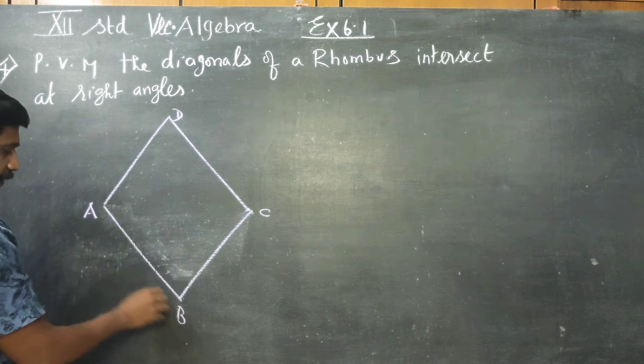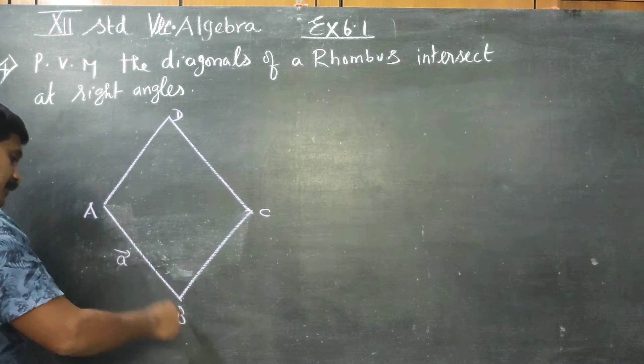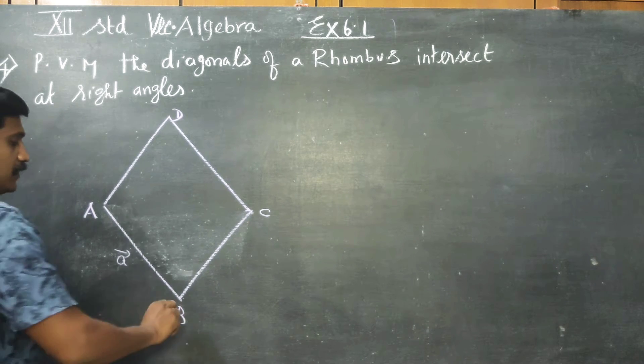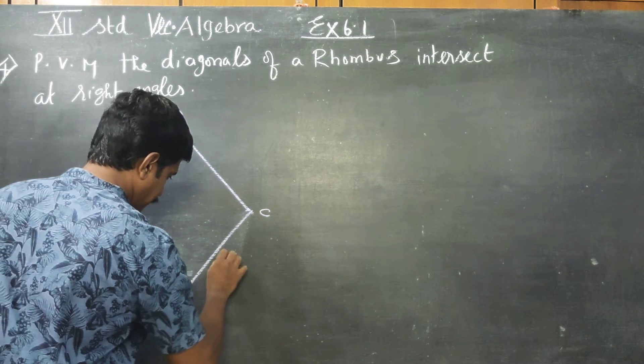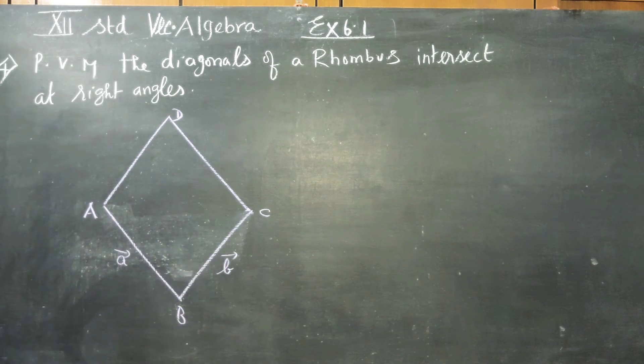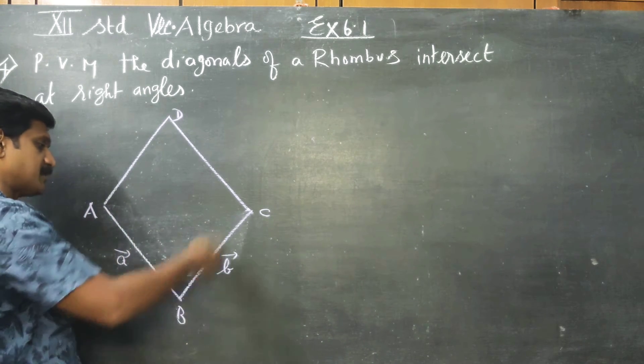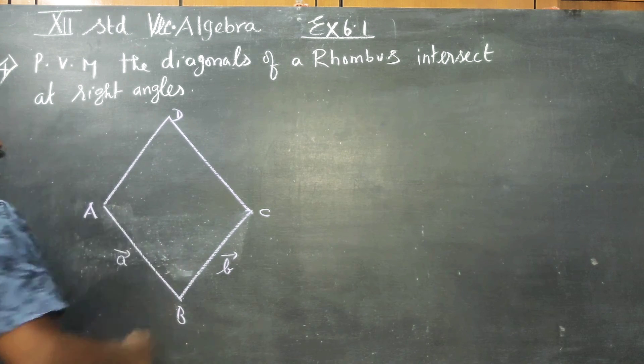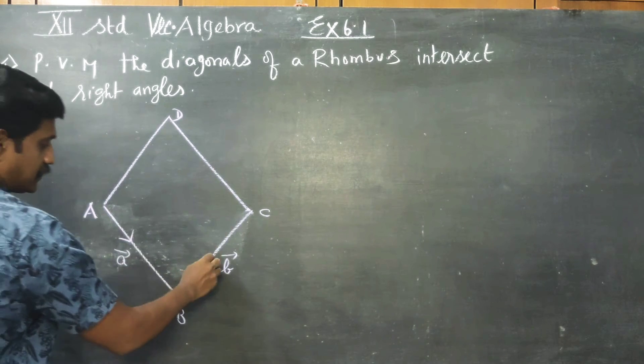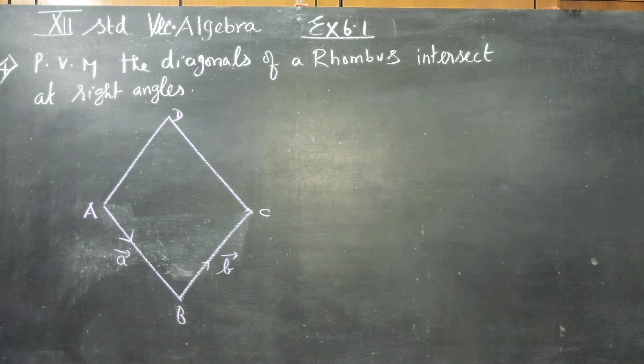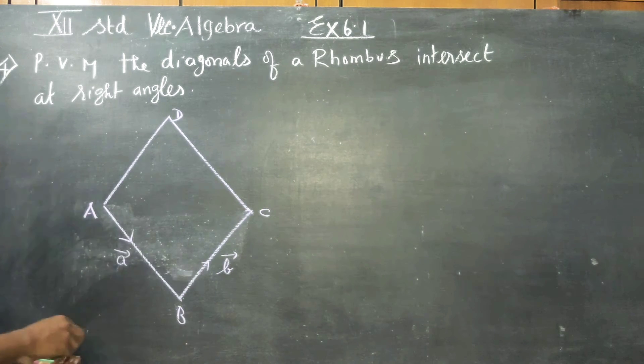Let measurement of AB be a and the vector be a vector. Let BC vector be equal to b vector. Here, a is equal to b, but a vector is not equal to b vector because directions are different. So AB is a vector, BC is b vector.